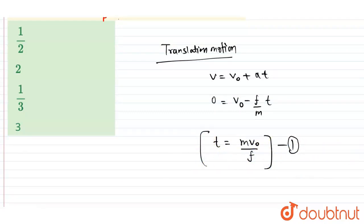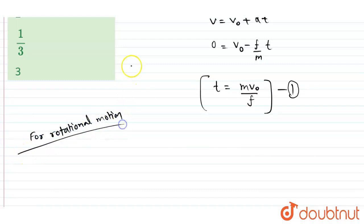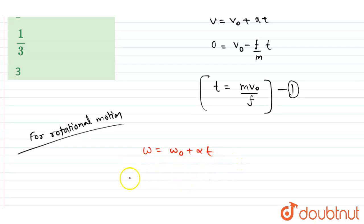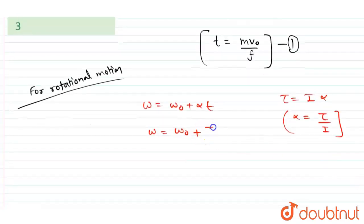Similarly for rotational motion, we write ω = ω₀ + α·t, where ω₀ is the initial angular velocity and α is the angular acceleration. Since τ = Iα, we get α = τ/I. The torque τ is caused by friction, so τ = f × r (force times perpendicular distance).